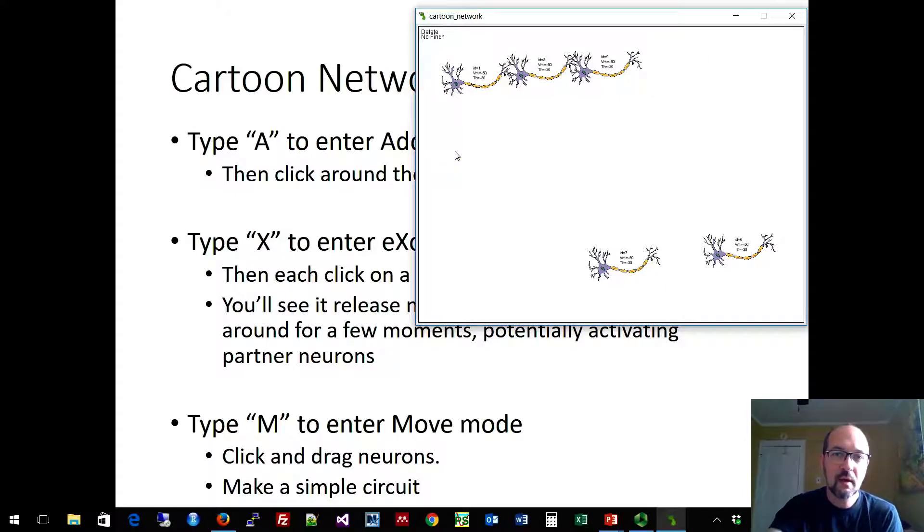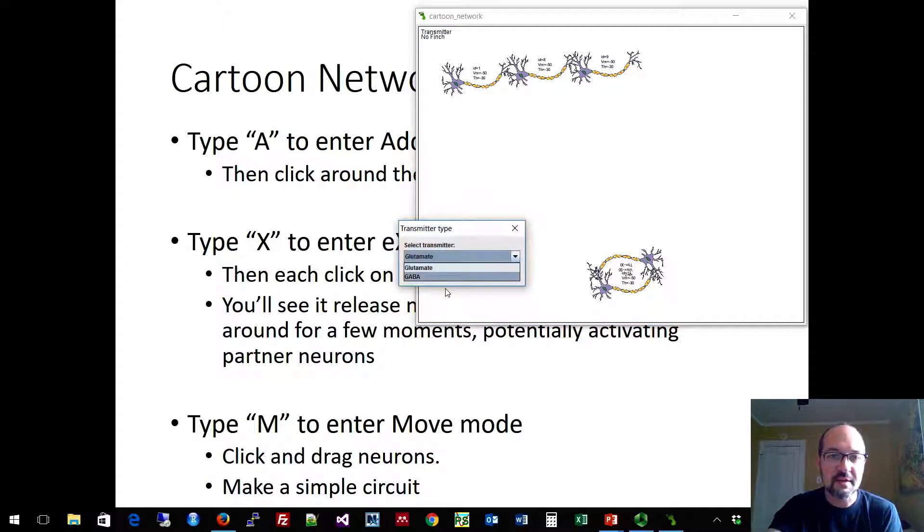D will access delete mode. R accesses rotate mode. G accesses grow. S shrink. X for excite. And a really important one is that you can change the transmitter type with W, and you can make a neuron release GABA instead of glutamate. In that case, you'll see that the neuron becomes marked with a red dot, and the transmitter released is red, and that will cause an inhibitory effect on its partners.